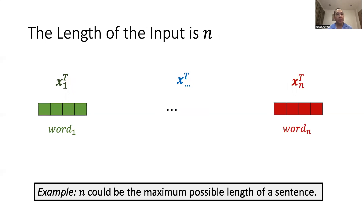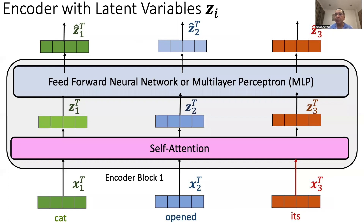Transformers can process sequences of arbitrary lengths. However, very long sequences translate to computational complexity. Let us examine a transformer encoder block. The sequence of data goes through two modules — self-attention and MLP. An encoder or decoder is made of several identical smaller blocks stacked together.